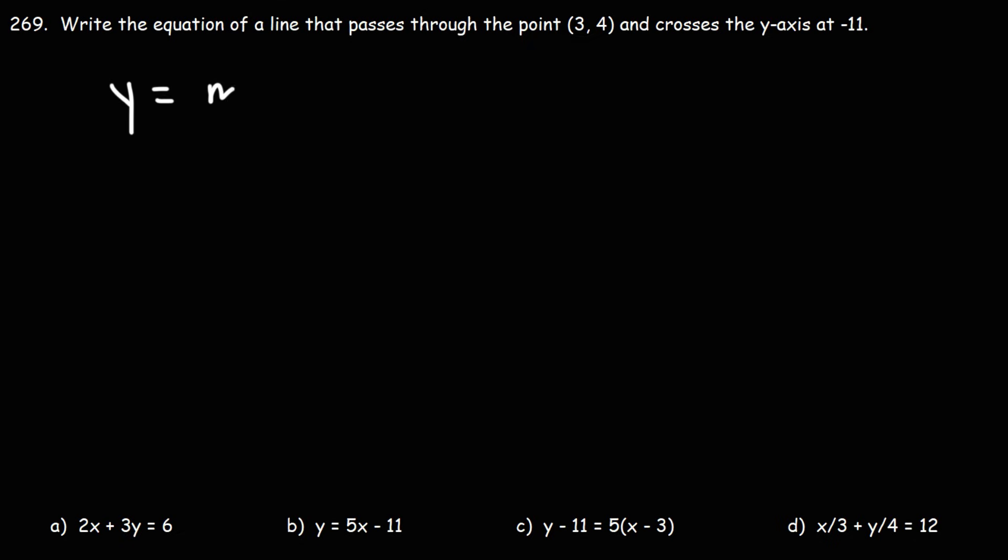Let's begin with the equation in slope-intercept form. The reason for this is we have the y-intercept. It touches the y-axis at negative 11, and we have an x and a y value since we have the point.